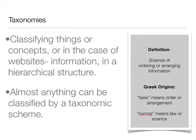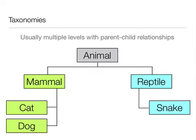Almost anything can be classified by a taxonomic scheme. Usually there are multiple levels with parent-child relationships. You can see in this example that there are two types of categories of animals: mammals and reptiles. Animal would be the parent to mammal, and mammal and reptile are both children of animal, which means they are both categories of animals.